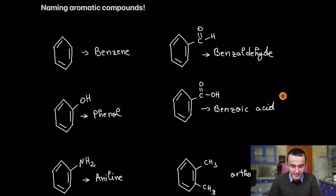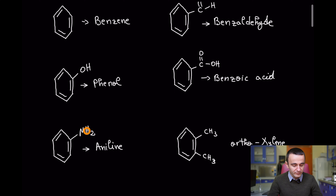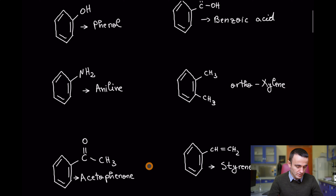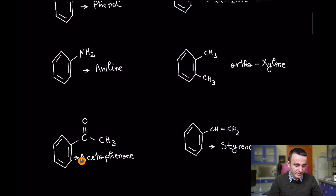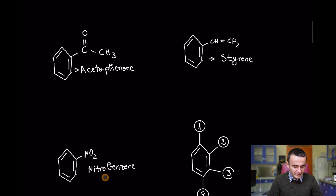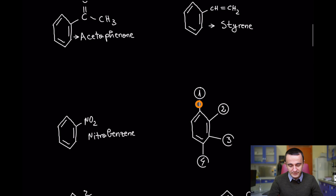Benzoic acid has a carboxylic group. The amine group compound is called aniline — remember that one. Ortho-xylene has two methyl groups in the ortho position, which I will discuss in a moment. Acetophenone has a carbonyl group here. Styrene has a double bond, and nitrobenzene has a nitro group.